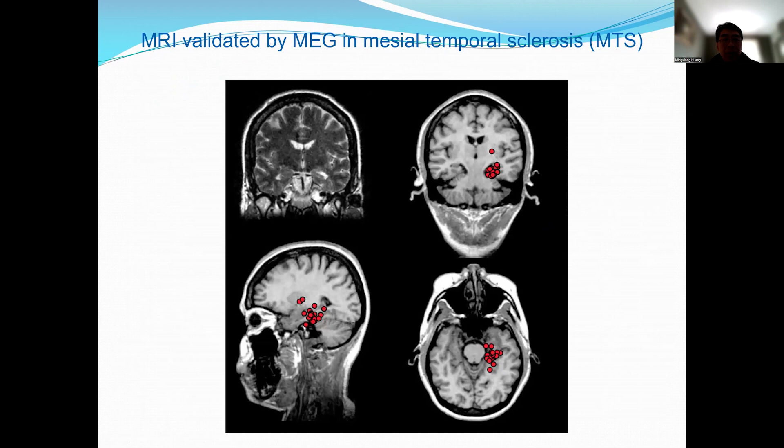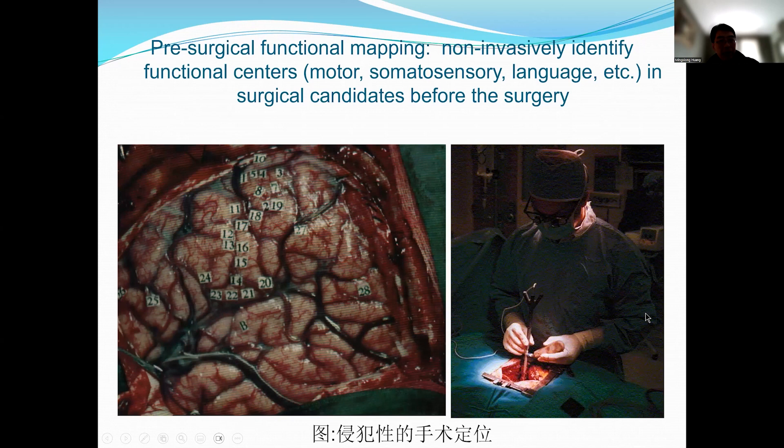A third example is a patient with temporal lobe sclerosis. You can see the shrinking of the hippocampus, and the red dots superimposed on T1 imaging localize to the hippocampus. This patient performed surgery and became seizure-free.